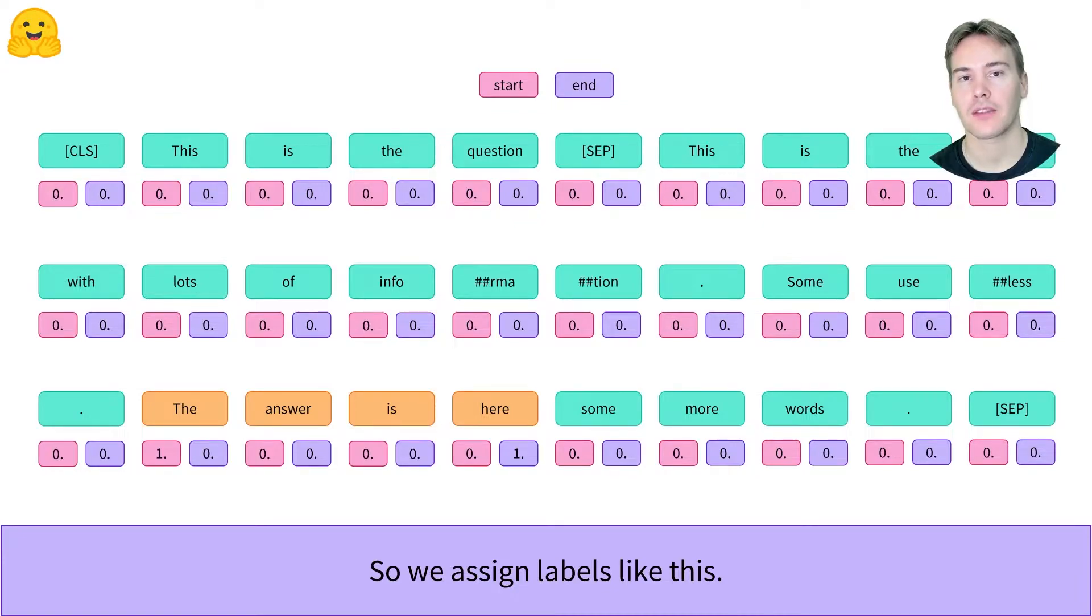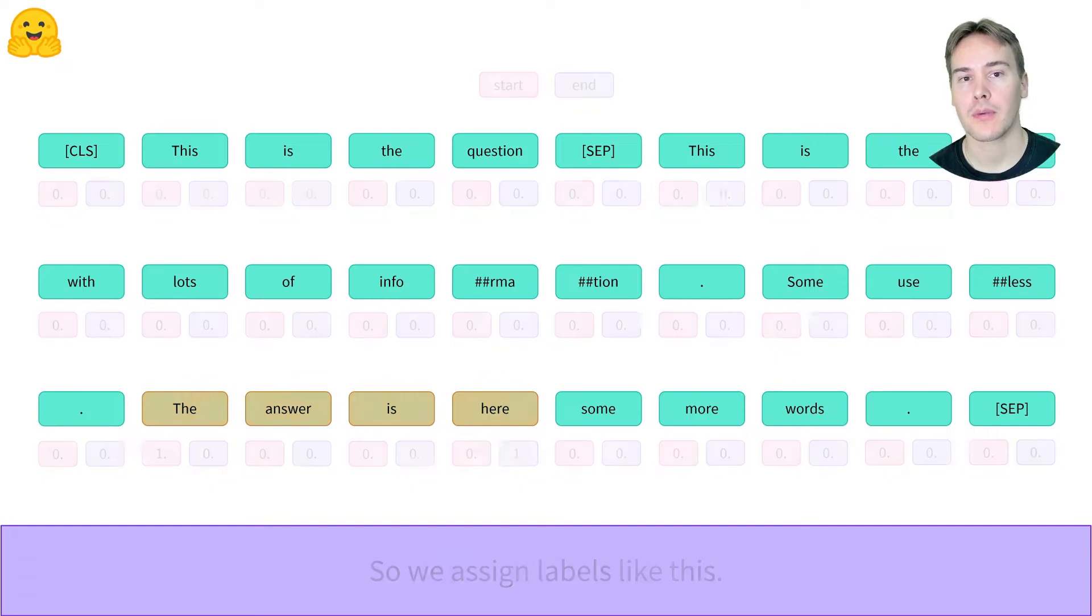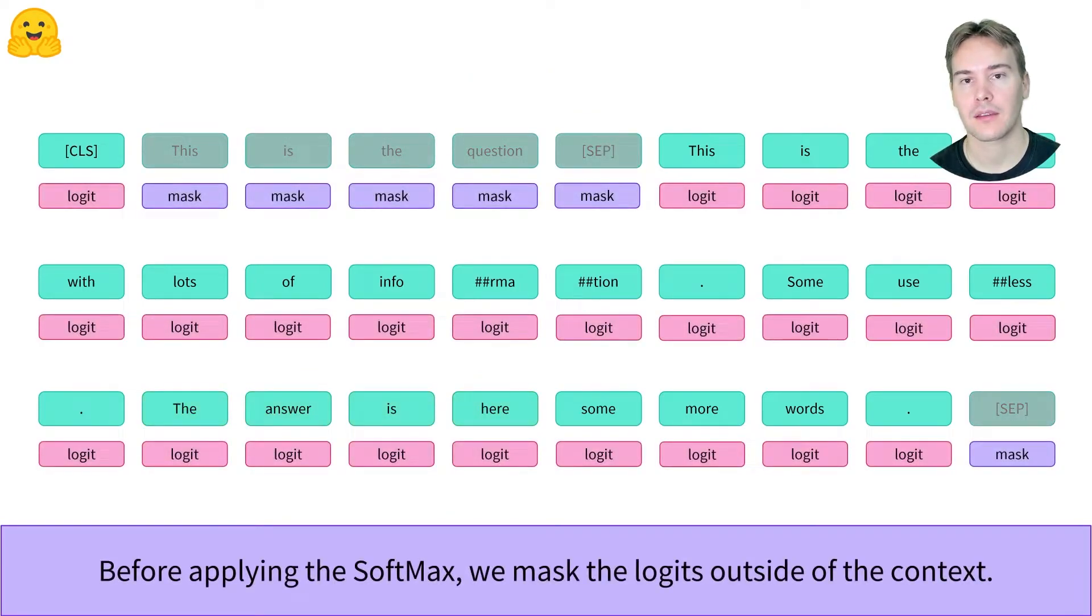To convert those logits into probabilities, we'll need to apply a softmax like in the text classification pipeline. We just mask the tokens that are not part of the context before doing that.